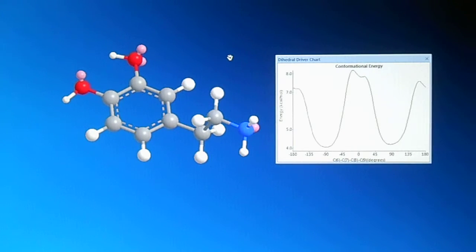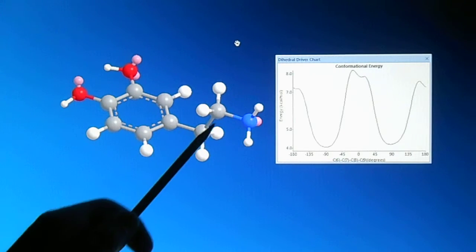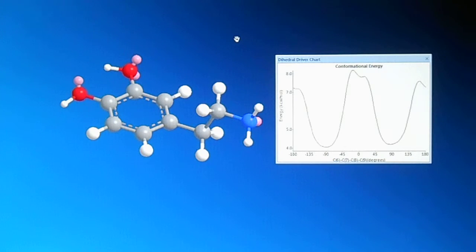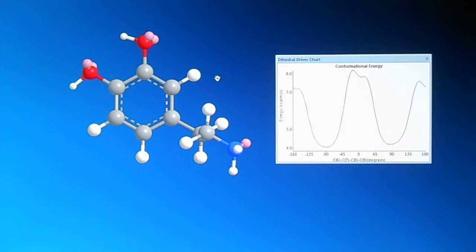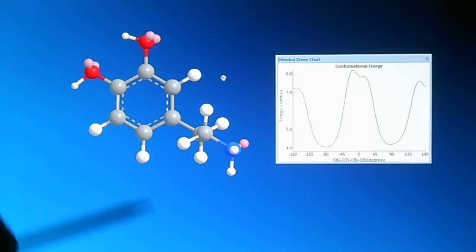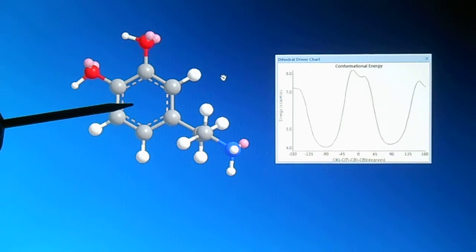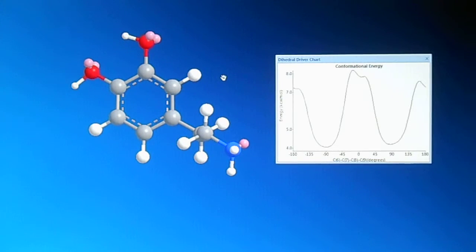The ethylamine side chain prefers to be in an extended or trans conformation, and if we rotate it, you can see that will permit minimization of the steric interactions between the phenyl ring here and the amine here.